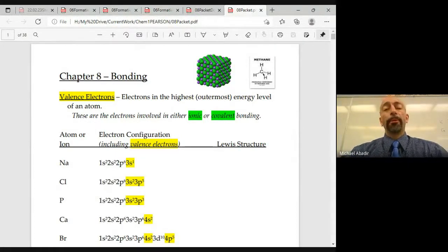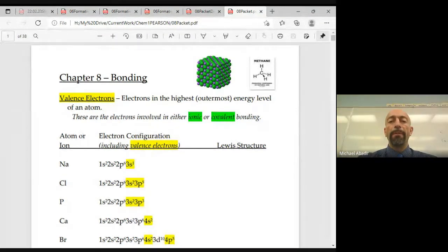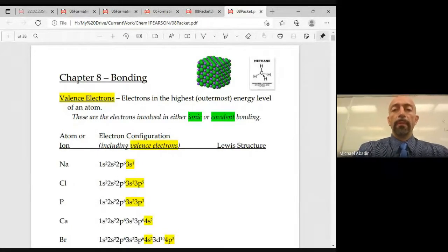Today we're going to be looking at the chapter 8 packet. We're going to start on the first page and talk about bonding. We're specifically going to introduce valence electrons.